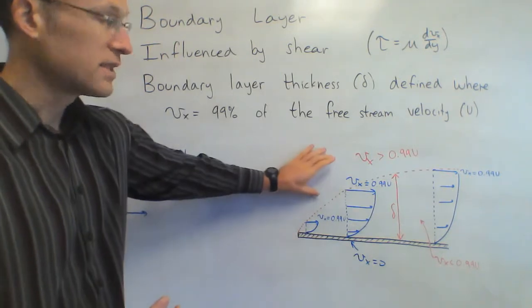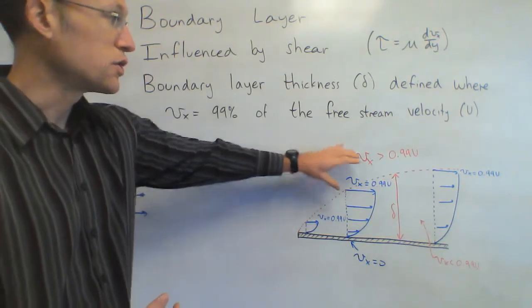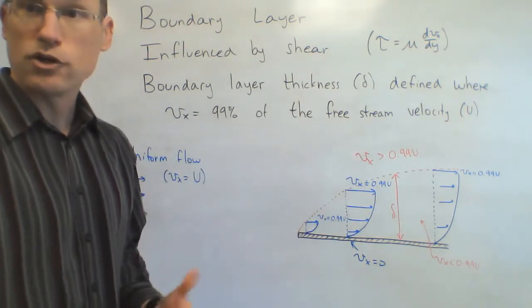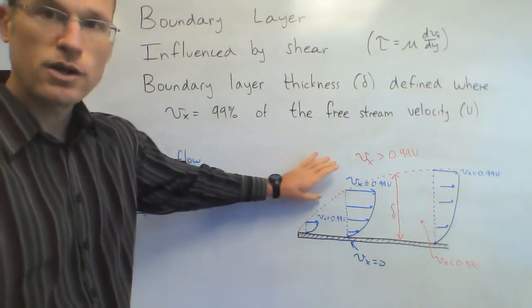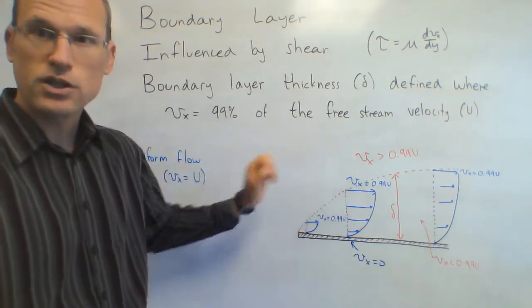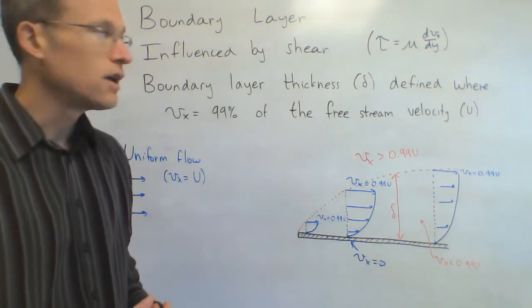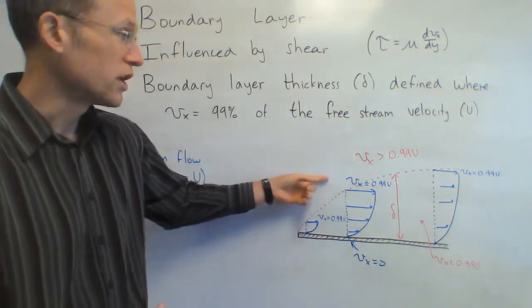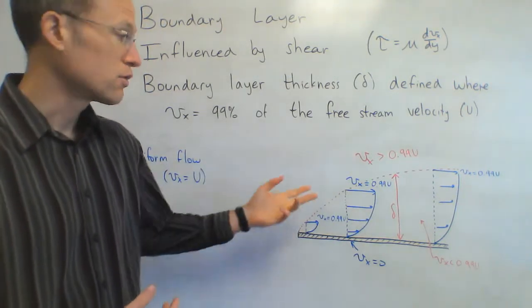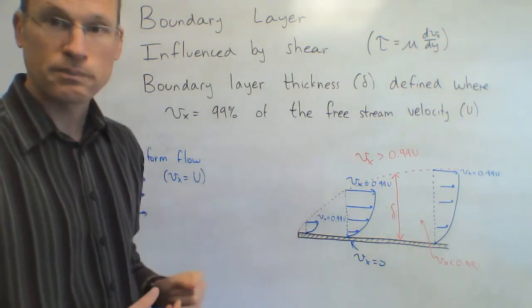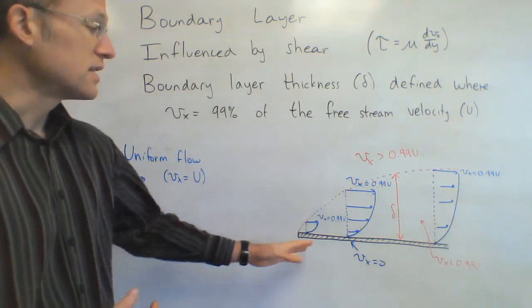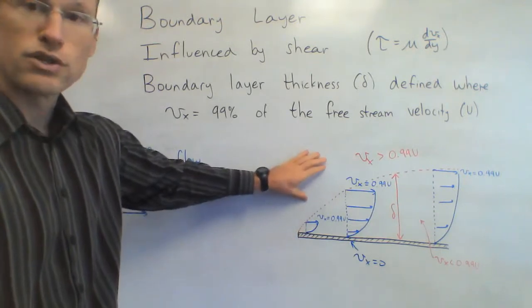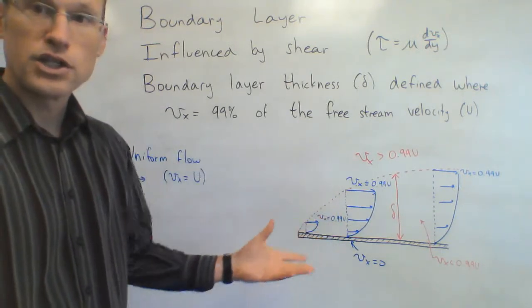Outside the boundary layer, the velocity really isn't changing very much — it only changes by 1%, going from 99% of U to 100% of U. Because it does not change very much, I don't have much shear stress. Shear stress is change in velocity over change in height, so there's basically zero shear stress outside the boundary layer. All the shear stress is inside the boundary layer, so outside of here I can ignore shear stress; inside, shear stress is important.